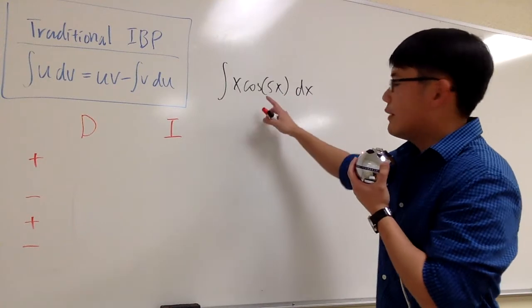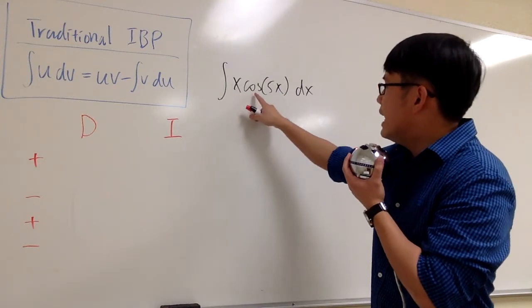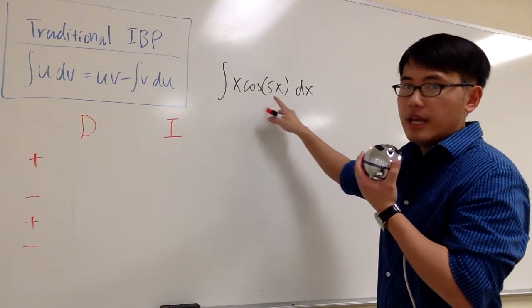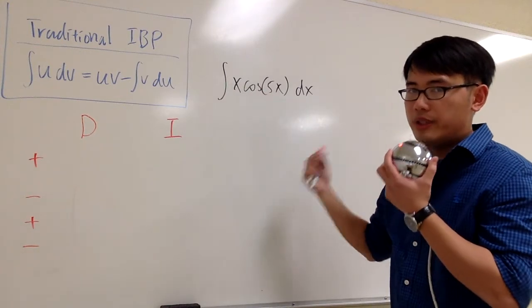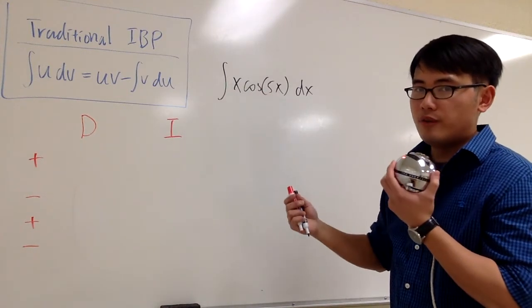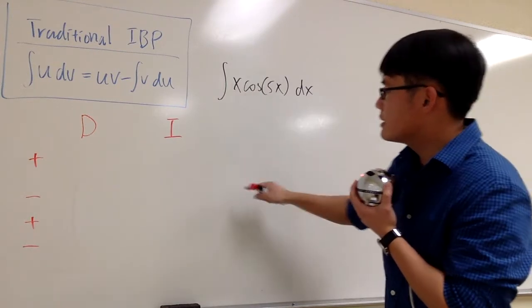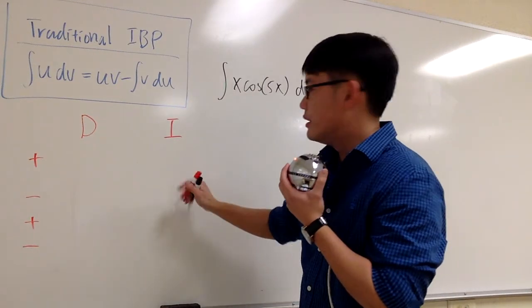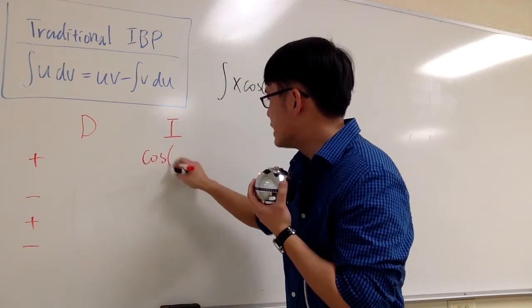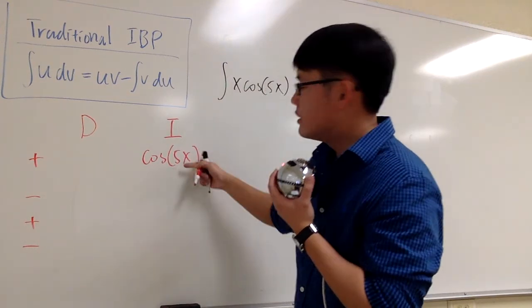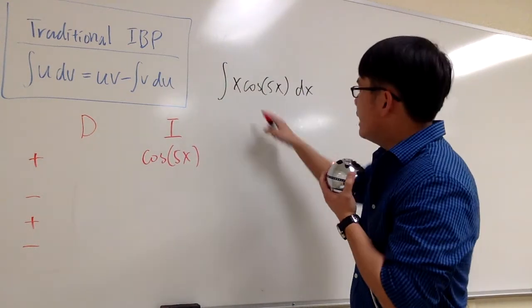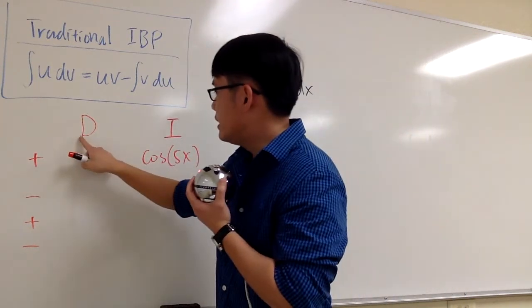In this integral we have two things: the x and cosine of 5x. Both of these are easy to integrate and easy to differentiate. In that case, let me choose cosine 5x to be integrated. So I'm going to write down cosine 5x under the I column, and then I'm going to put down x for the D column.